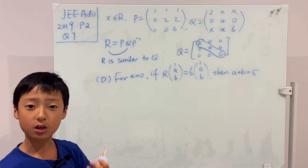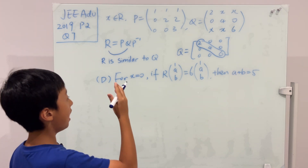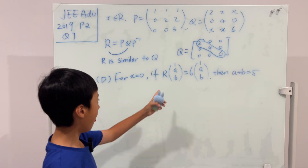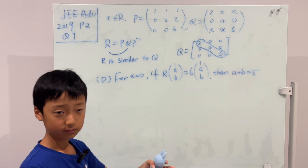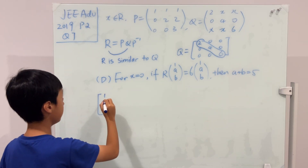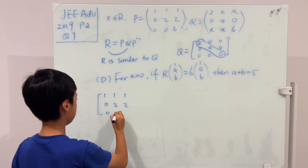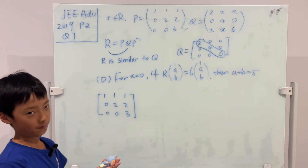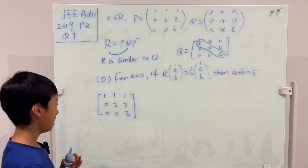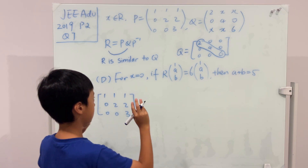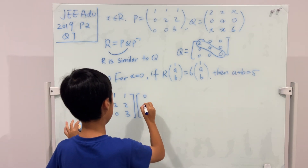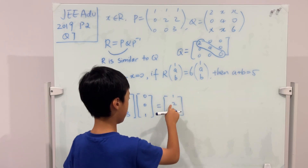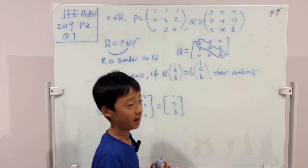The eigenvector of Q for eigenvalue 6 is [0, 0, 1], which is easy to verify. So if Q's eigenvector for eigenvalue 6 is [0, 0, 1], then R's eigenvector is P times [0, 0, 1]. Multiplying P — which is the matrix with rows [1,1,1], [0,2,2], [0,0,3] — by [0, 0, 1] gives [1, 2, 3]. And this is of the form [1, A, B], so A plus B equals 2 plus 3 equals 5. Tick — part D is correct.